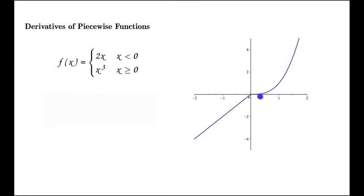For x greater than 0, we take the derivative of x cubed. The derivative of x cubed is going to be 3x squared. The slope at any particular point here is going to be 3x squared. So we can say f prime of x is 2 for x less than 0 and 3x squared for x greater than 0.